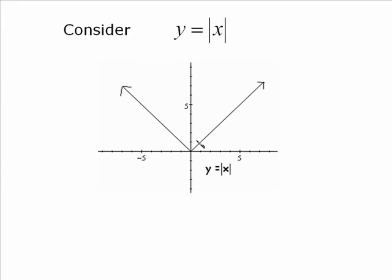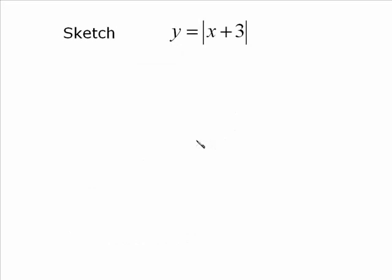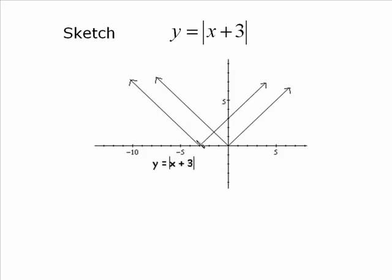Now if we went back to that graph, y is equal to the absolute value of x, the original basic graph, untransformed, and now I want to sketch y is equal to the absolute value of x plus 3. And here are both the graphs. The original is unlabeled, but is there.